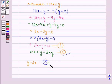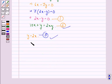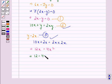From equations 2 and 3, we get 10x plus 2x equals 2x times 2x. This implies 12x equals 4x squared. This implies 12 equals 4x, so x equals 12 divided by 4, which equals 3.